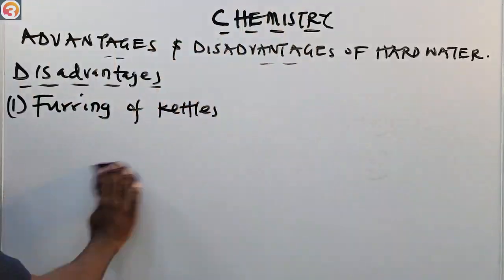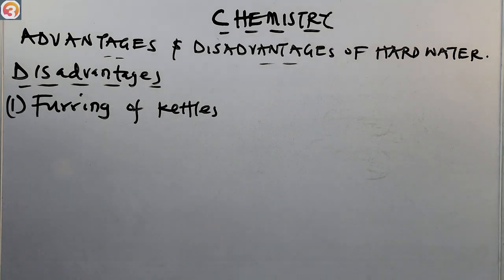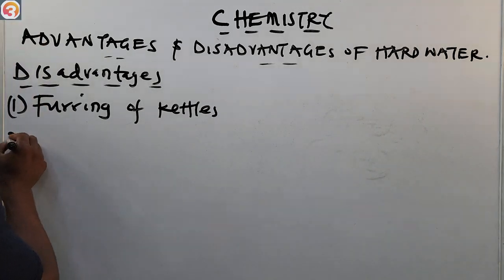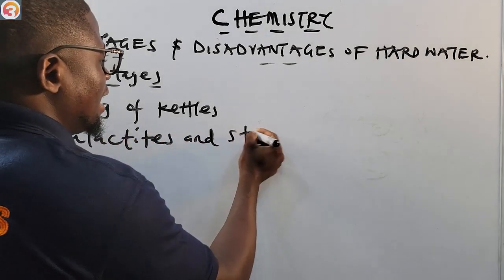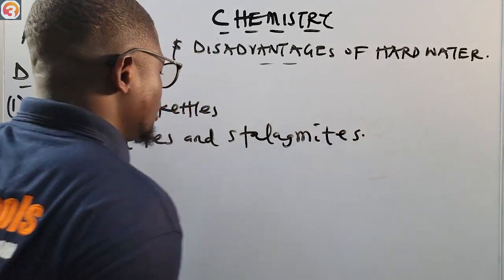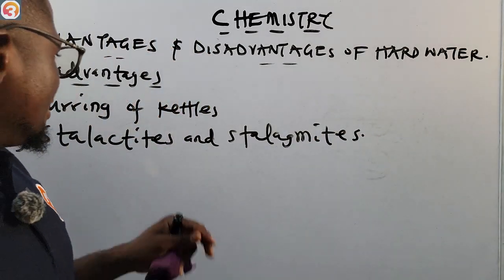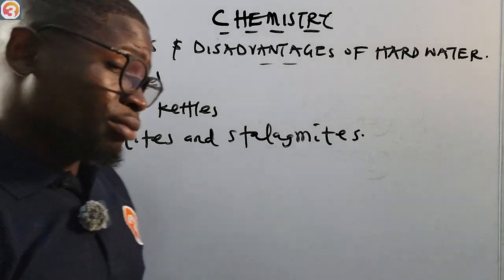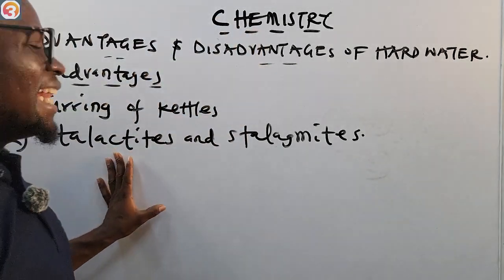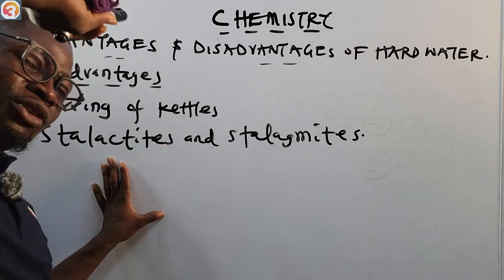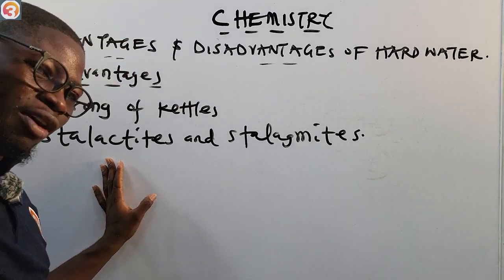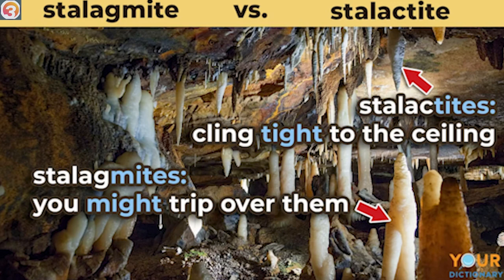Disadvantage number two: we also have stalactites and stalagmites. These two terms are very easy to remember and they have appeared in past questions before. Stalactites are formed at the top of a cave — they hang from the top of a cave. You may have seen a cave in a movie or picture.